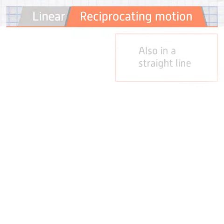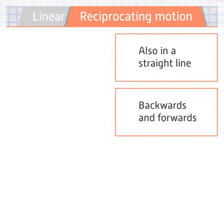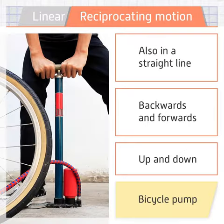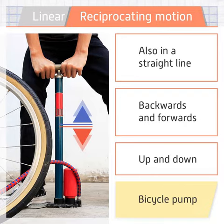Reciprocating motion is similar to linear motion as it's also in a straight line, but reciprocating motion is both backwards and forwards or up and down. An example of this is a bicycle pump. The piston is pulled out to drag compressed air into the pump, but it can also be pushed back in to release the air into the tyre.